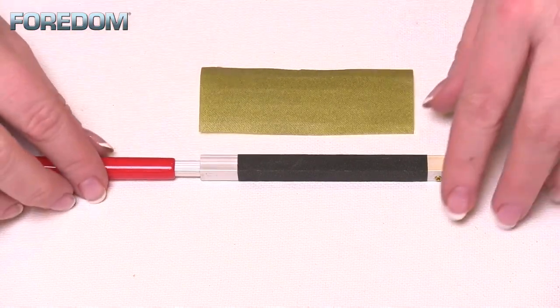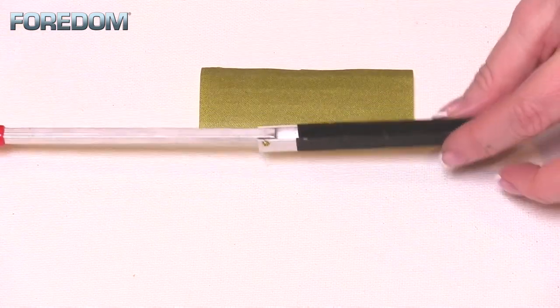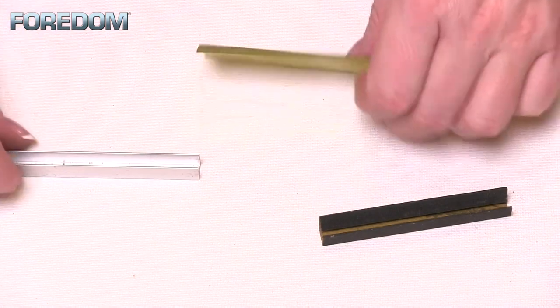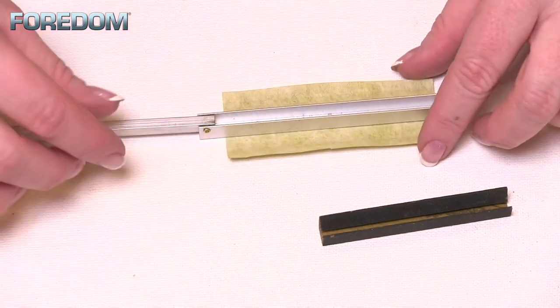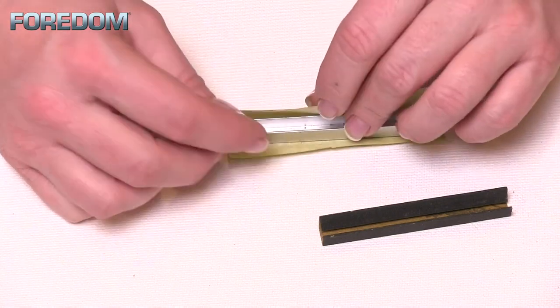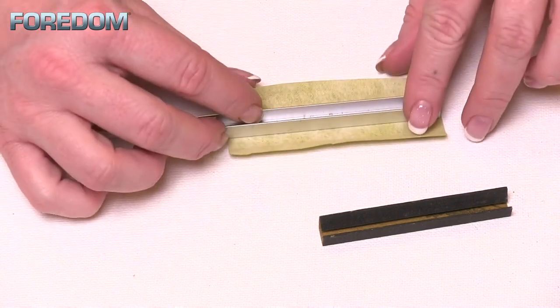To swap out your different sanding sticks, just rotate this around. You can slip that off, and then place your new piece on here. You have a couple of different options - you can overlap it, but because I want this nice and tight, I find it's easier to do one side at a time.